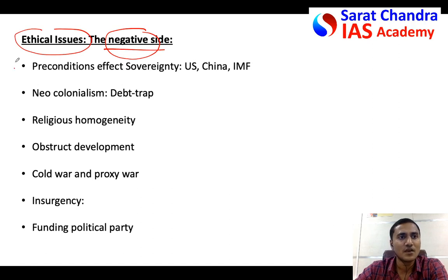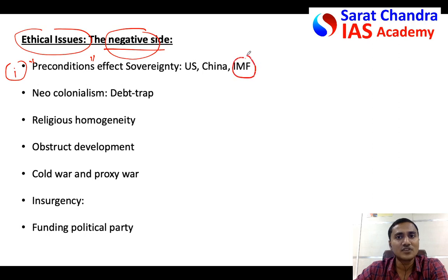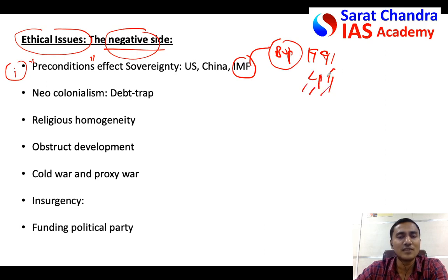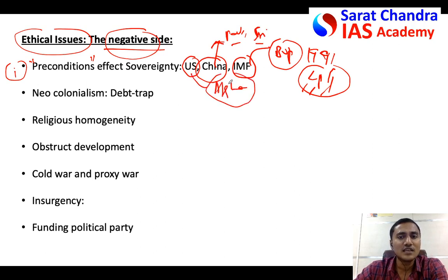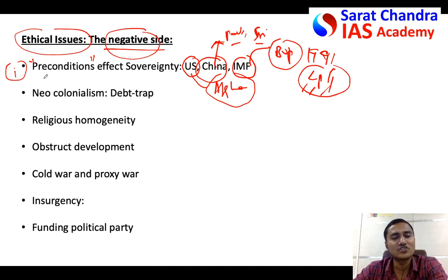Most international funding comes with certain preconditions, and these preconditions may affect the sovereignty of the country. For example, when the IMF helped India during the balance of payments crisis in 1991, they asked India to carry out Liberalization, Privatization, and Globalization (LPG) reforms - affecting India's economic sovereignty. Similarly, when China funds Pakistan or Sri Lanka, it affects their economic sovereignty. When the USA funds Afghanistan, it tries to involve itself in local politics, affecting Afghanistan's political sovereignty.